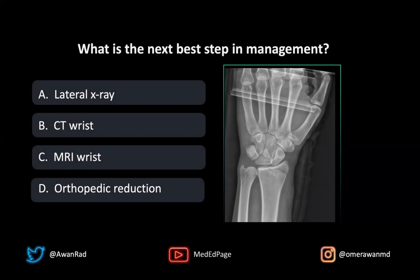Not only is there an intraarticular radial fracture, but this lunate is a little abnormal. The morphology is not what it should be. Usually a lunate will be kind of rectangular or trapezoidal, but here it's pie-shaped. And that indicates that there is some element of carpal malalignment because the morphology of the lunate has changed.